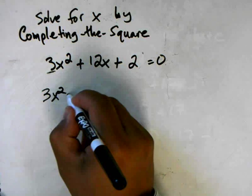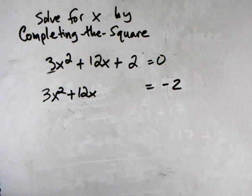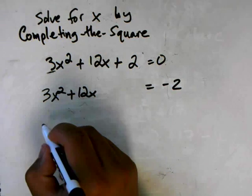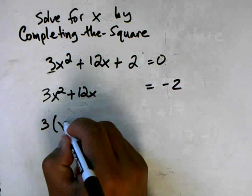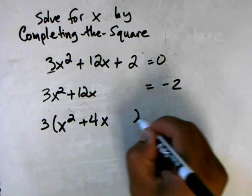The first thing I'm going to do is move the constant term to the other side of the equation. So I have 3x² + 12x = -2, and then I can factor out a 3, which gives me 3(x² + 4x).